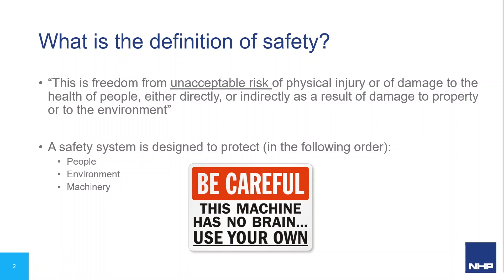The key term there is 'unacceptable risk,' which we will discuss in more detail soon. The systems put in place to provide safety are designed first and foremost to protect people and secondarily the environment. When we talk about machine safety, we're concerned about the safety of people around a machine, not necessarily the protection of the machine itself. I'm not willing to put a price tag on a machine in favour of a person's livelihood or life.